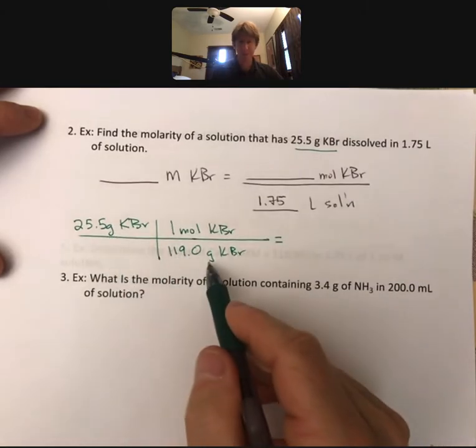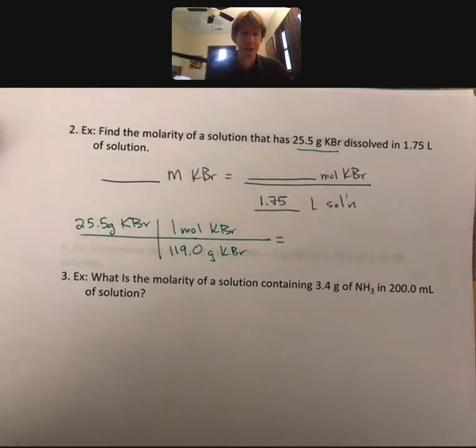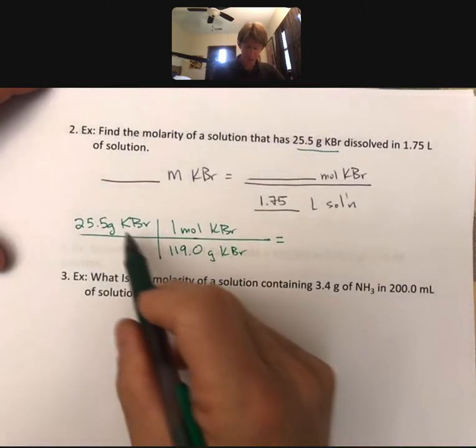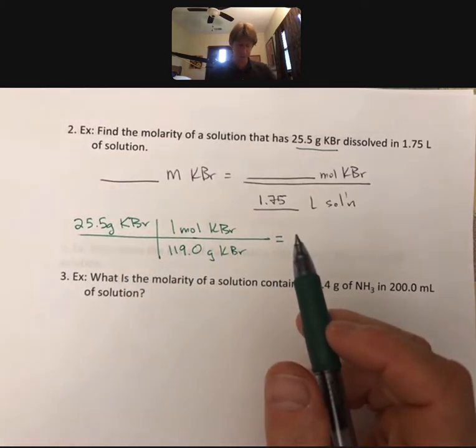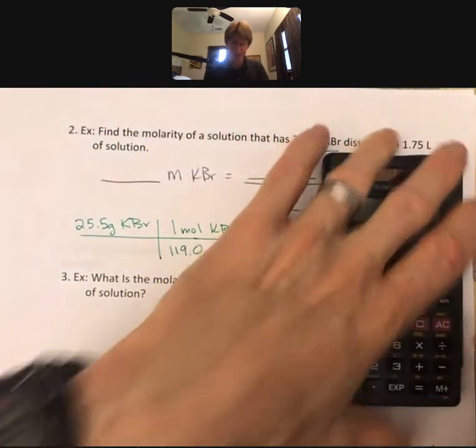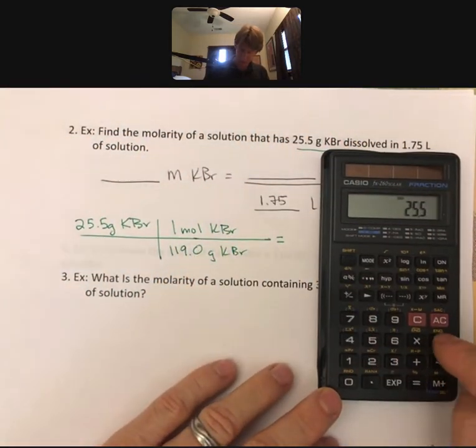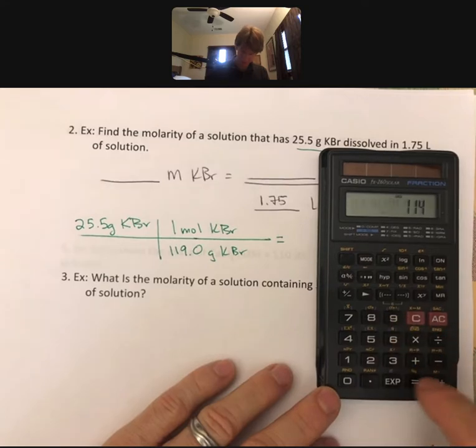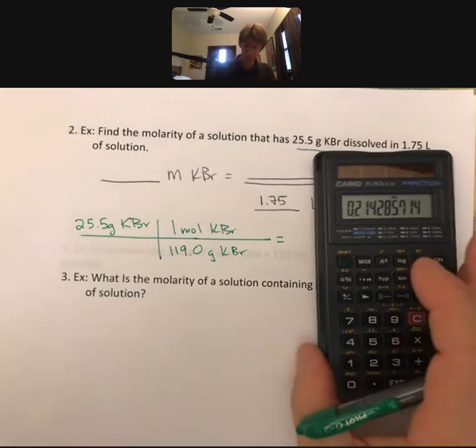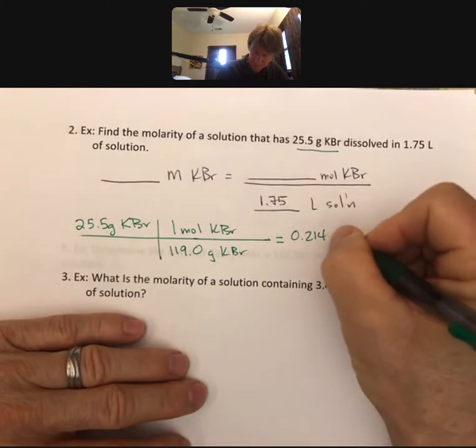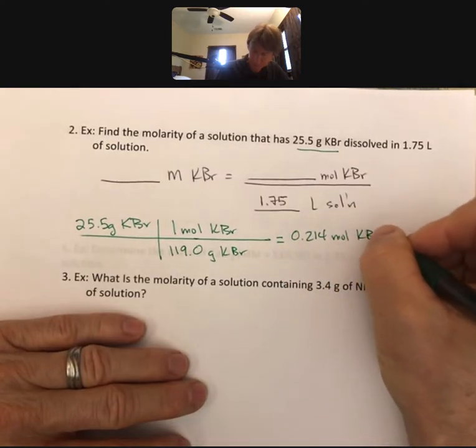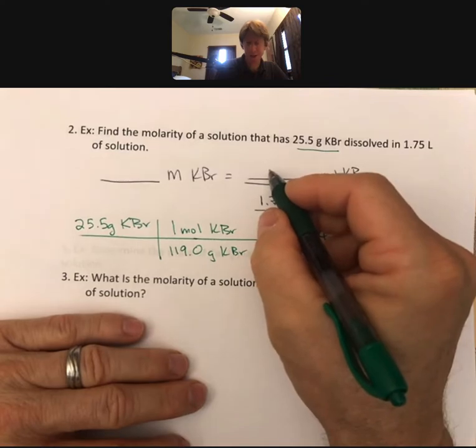I make sure that my grams of potassium bromide cancel, leaving me with units of moles. And then I'll do the math: 25.5 divided by 119, I get 0.214, which I can then plug straight in the top here.